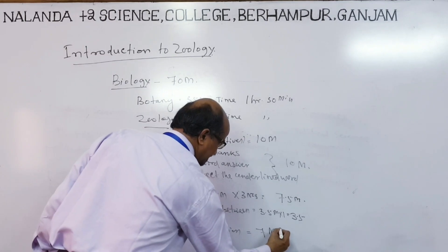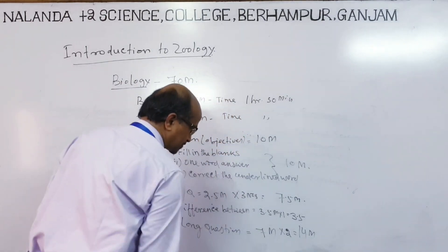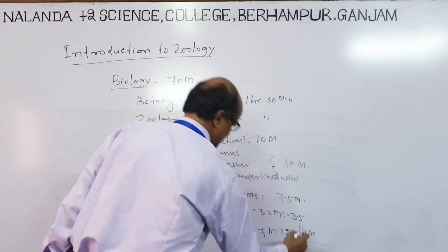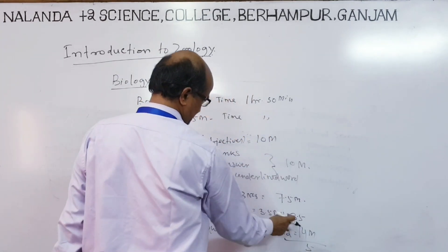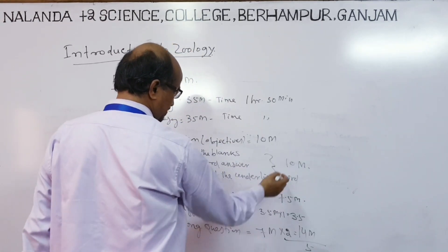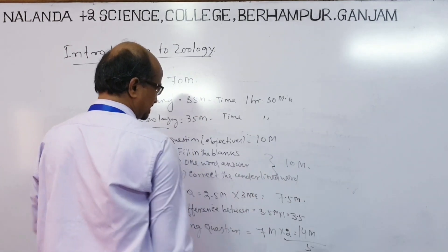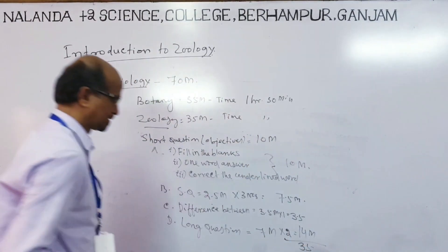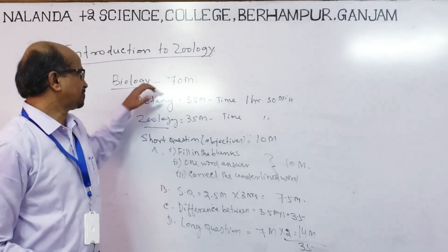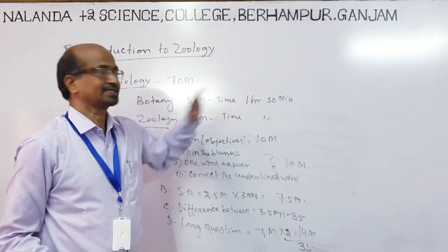You have to answer 2 long questions, that is 14 marks. So total marks: 10 plus 7.5 plus 3.5 plus 14 equals 35 marks total. Like this, in Botany also you will have the same pattern.